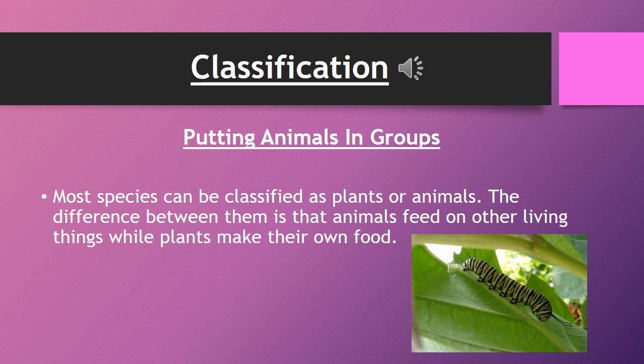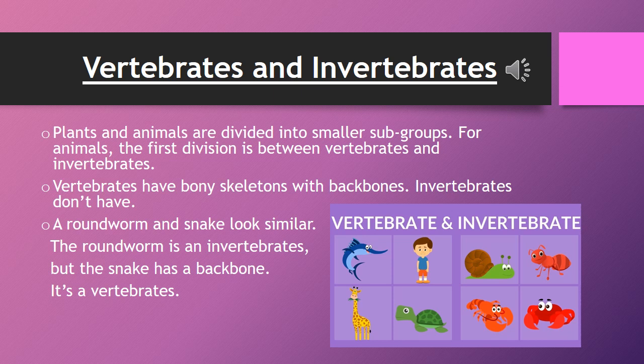Putting animals in groups. All living organisms are classified into groups based on very basic shared characteristics. Organisms within each group are then further divided into smaller groups based on more detailed similarities within each larger group. This grouping system makes it easier for scientists to study certain groups of organisms. Most species can be classified as plant or animal. The difference is that animals feed on other living things while plants make their own food.